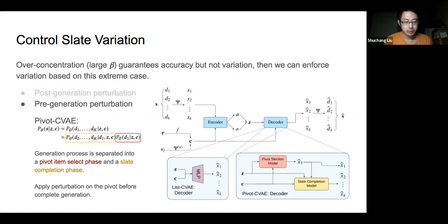The separated model is mathematically equivalent to the original model in the probabilistic view, so without perturbation, this method behaves almost identically to the original model. When engaging perturbation, we only need to apply it to the pivot and the majority of the generation still remains intact in the later slate completion model.